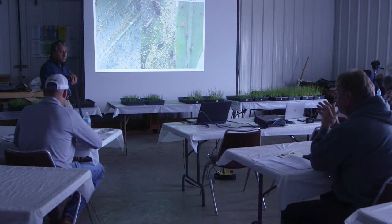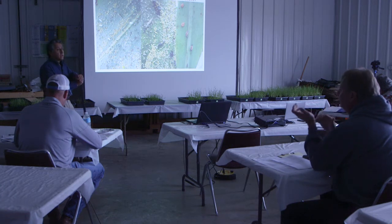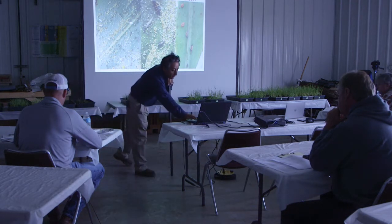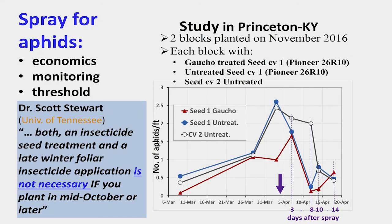If you're waiting for the natural predators to kill them off — that's correct, but not all the time do we need to completely spray. When do you spray for aphids? This depends on the economics of the crop. Spraying should depend on monitoring, and also on the threshold — which should sometimes change based on the economics of the market.